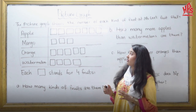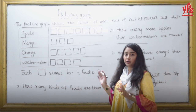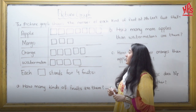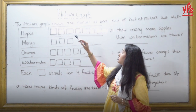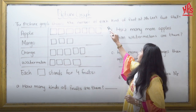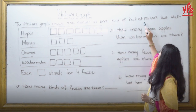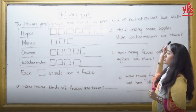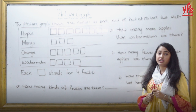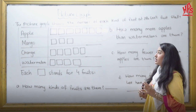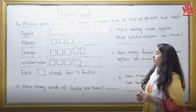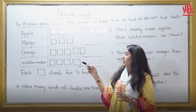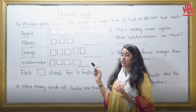So here I have a question. The picture graph shows the number of each kind of fruit at Mr. Lee's fruit stall. Mr. Lee has different kinds of fruits in his stall. He has apple, mango, orange, and watermelon.